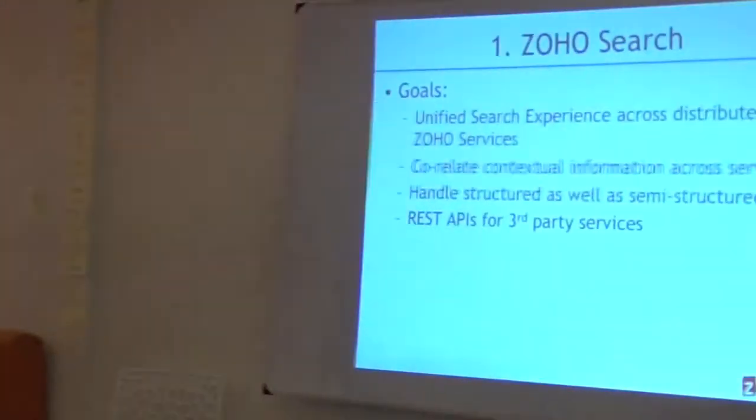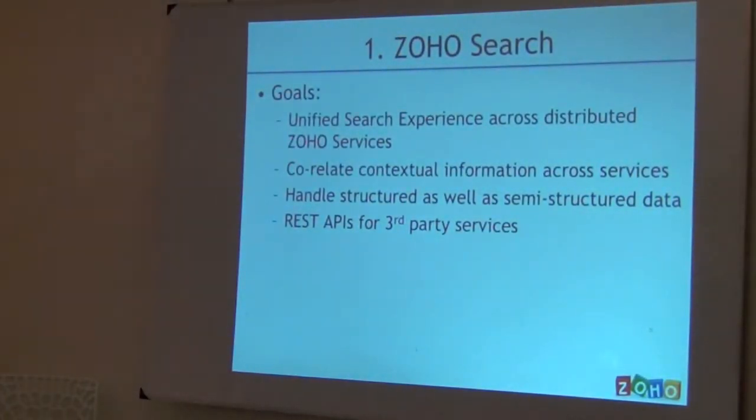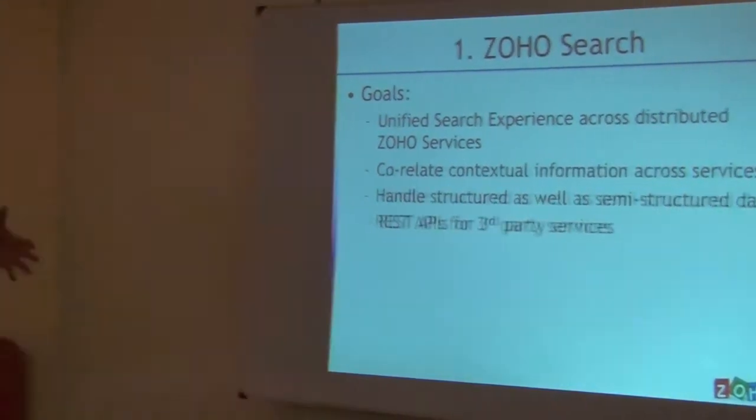The goal for the first use case — Zoho Search — was to provide a unified search experience across various Zoho services. That means you have to not only search relevant information across these services but also be able to collate that information. You also have to handle both structured data and semi-structured data, since some data lives in RDBMSs, some in the Hadoop file system, and some is user content like documents and spreadsheets. And then there's exposing REST APIs for this.